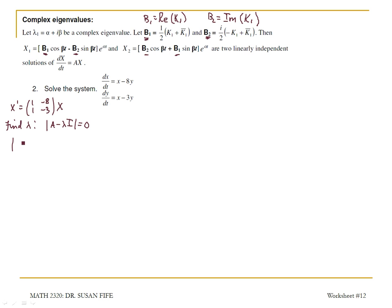And a minus lambda i gives me 1 minus lambda and negative 8 in the first row, and then 1 and negative 3 minus lambda in the second row. If I take this determinant, I get 1 minus lambda times negative 3 minus lambda minus negative 8.